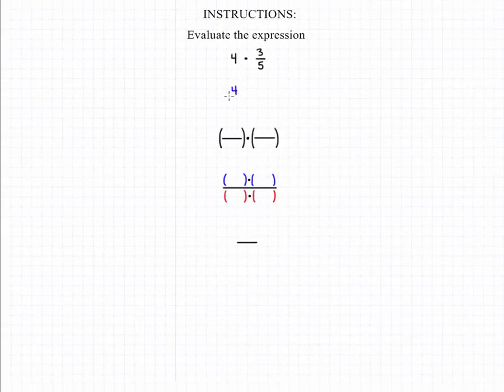In order to evaluate this expression, we need to remember that all integers can be expressed as themselves over 1 when we need to convert them into a fraction. So 4 becomes 4 over 1.